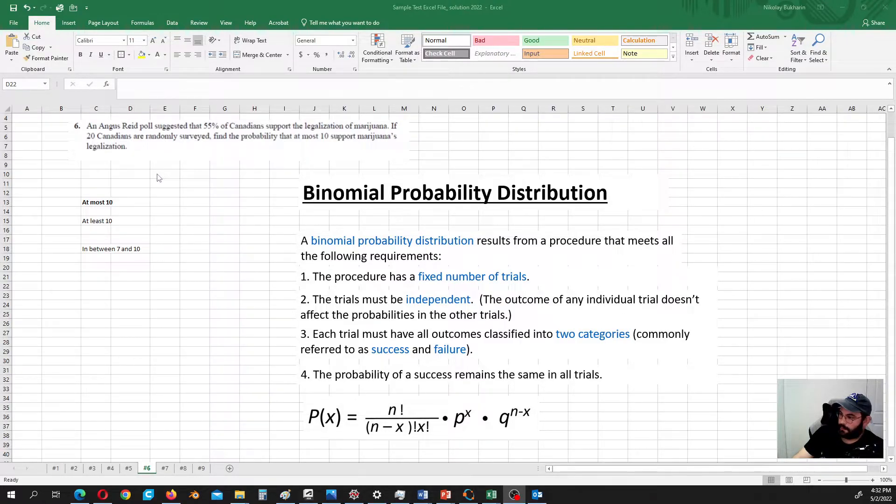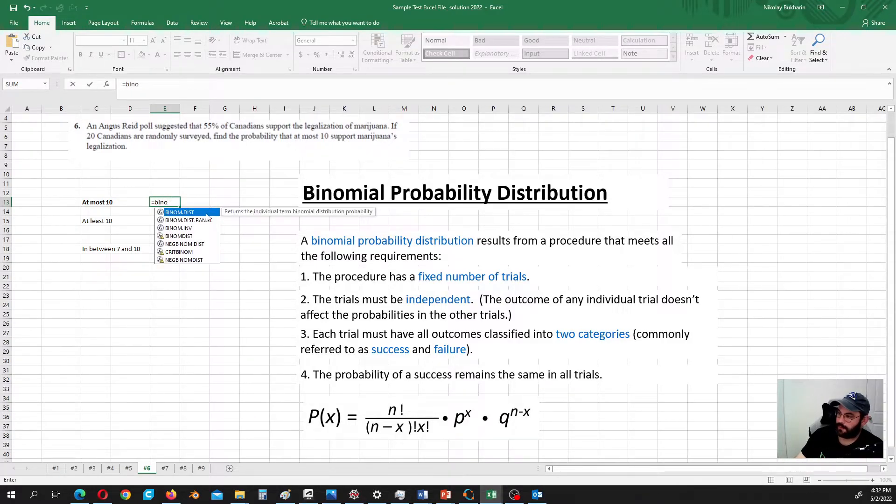Okay, you need to be really careful with the wording in this type of problems. At most 10 means 10 and less. And this is perfect for our binomial distribution formula.